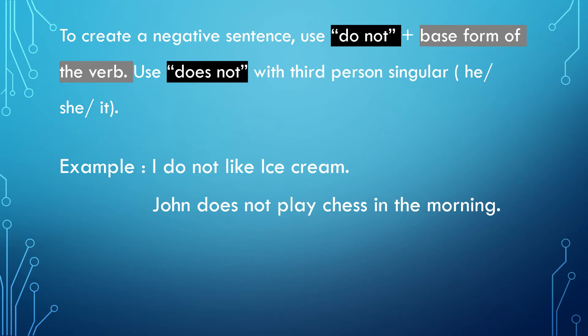In order to create a negative sentence, we use 'do not' along with the base form of the verb. In the third person singular, the case is different — we use 'does not' along with the base form of the verb. For example: 'I do not like ice cream.' As the subject 'I' is in the first person singular, we use 'do not.' In the second case: 'John does not play chess in the morning.' John is in the third person singular, so we use 'does not' along with the base form of the verb.